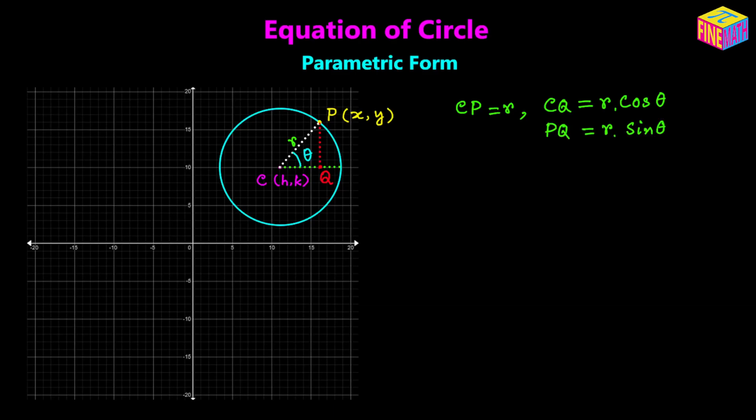Now let's think about the x-coordinate of point P. The x-coordinate of point P will be equal to the x-coordinate of the center plus CQ that distance, so we can say x is equal to H plus CQ, and that can be written as H plus R times cosine of theta, because CQ is equal to R times cosine of theta.